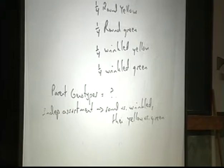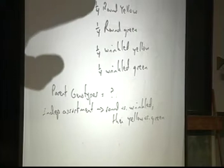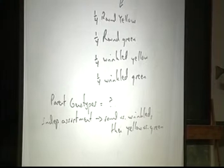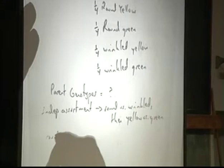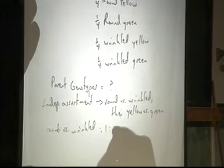Mendel's rule says that what's happening with the round versus wrinkled is independent of what's happening with the yellow and the green. So we can ignore the yellow and greens and just look at round and wrinkled. Independent assortment says that we can look at round versus wrinkled, then look at yellow versus green. The second thing you must look at when solving these kinds of genetic problems is ratios — they will oftentimes give you the answer right off the bat. Look at the ratio of round versus wrinkled: we have a one-to-one ratio, half round and half wrinkled.